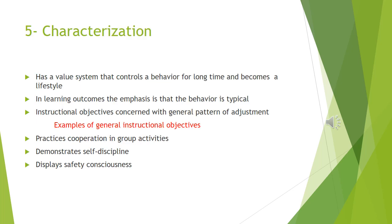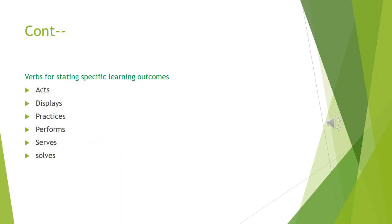Characterization is the highest level of affective domain. At this level, an individual's behavior is controlled by a value system that transforms it into a lifestyle. The major emphasis is on the fact that the behavior is typical. Instructional objectives concerning students' general pattern of adjustment fall in this category. Examples of general instructional objectives include: practices cooperation in group activities, demonstrates self-discipline, and displays safety consciousness. Verbs like acts, displays, practices, performs, serves, and solves can be used for stating specific learning outcomes.